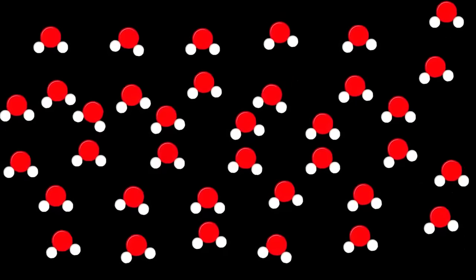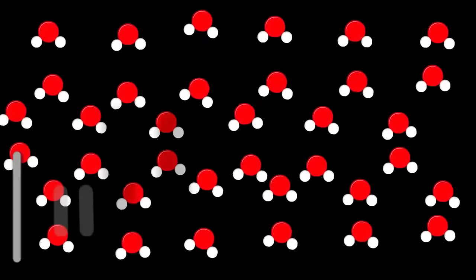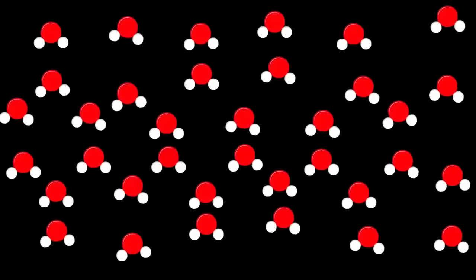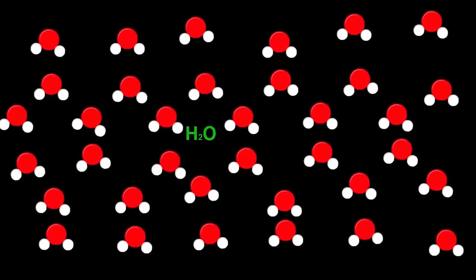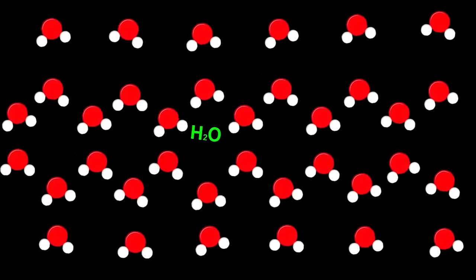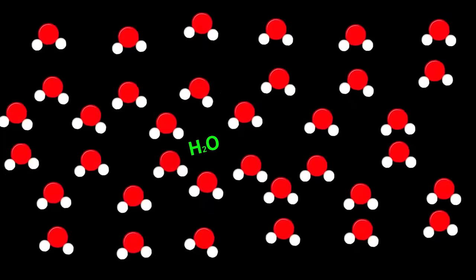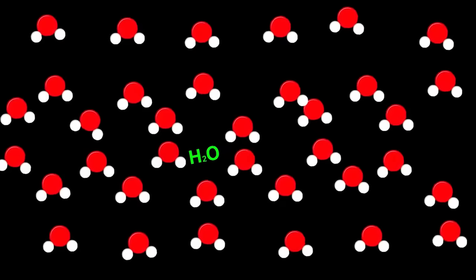The red atoms are oxygen and the white atoms are hydrogen. So what's the formula of these molecules? H2O. You knew that. Notice how they're close together. That's why ice has a fixed volume and can't be compressed.